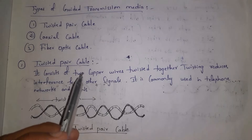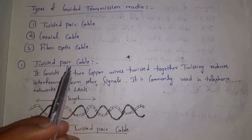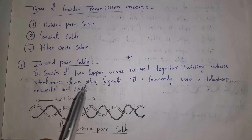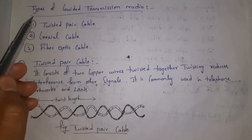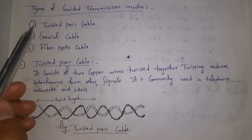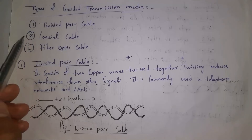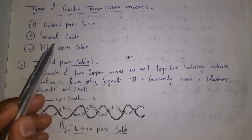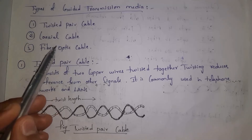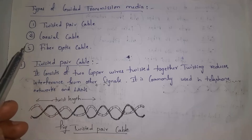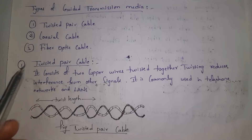There are three types of guided transmission media: twisted pair cable, coaxial cable, and fiber optic cable. I will explain all three of these in detail.